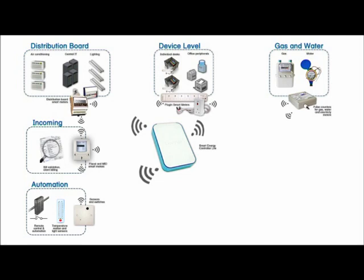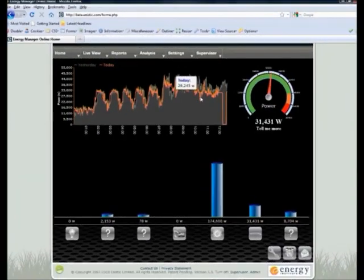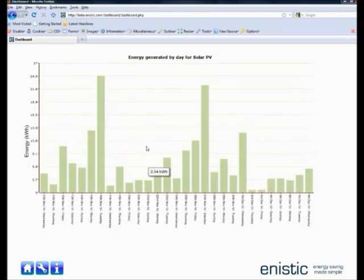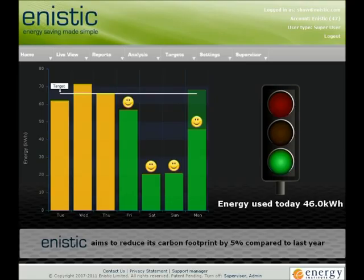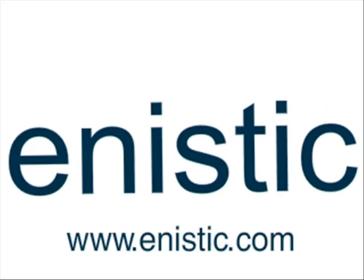Unistic Smart Meter solutions can be tailored to meet individual needs and are suitable for any size of organisation. To find out more about the range of solutions available to you, contact us today on 0844 875 1600 or visit our website at www.unistic.com.